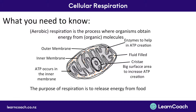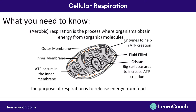You also need to know about mitochondria. There's an outer membrane around the outside, and an inner membrane which folds into what's called cristae. These folds have a big surface area to increase the amount of ATP that can be made. ATP is created in this inner membrane across all the cristae, and enzymes help a lot in the ATP creation process. Really active cells are going to need lots of mitochondria compared to less active cells.